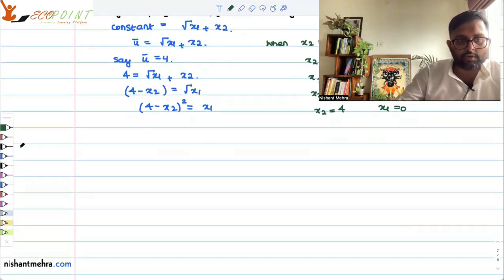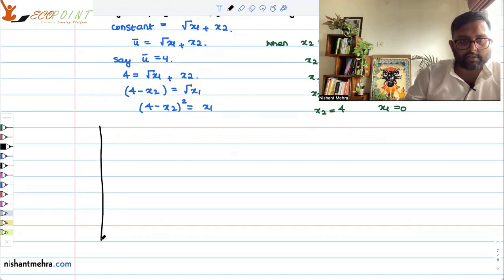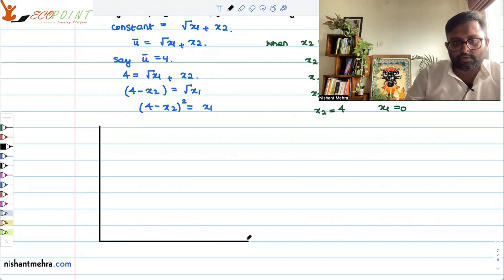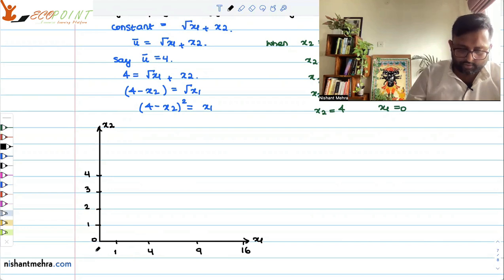Now I can plot these points to get the kind of indifference curve which you want. They are not drawn to scale, so do not come back to me for that. So you have x1, x2. x2 is 0, 1, 2, 3 and 4. x1 is 1, here you have 4, maybe you have 9 and somewhere here you have 16, like this.